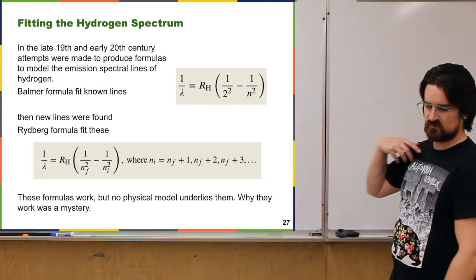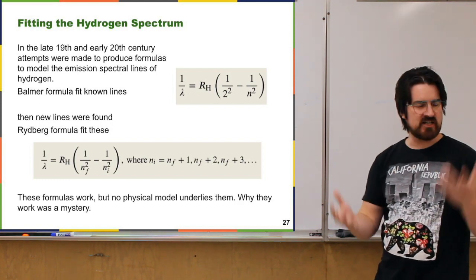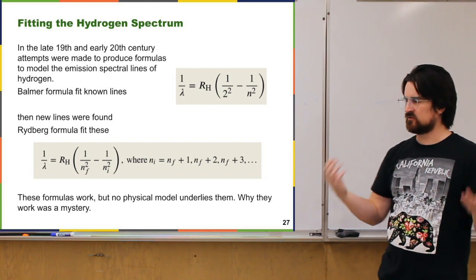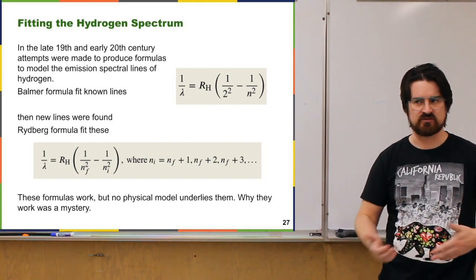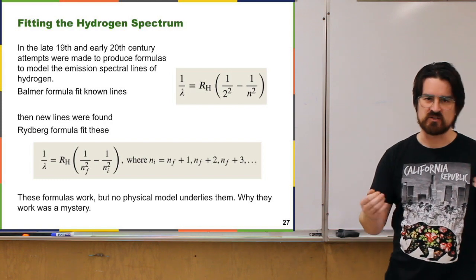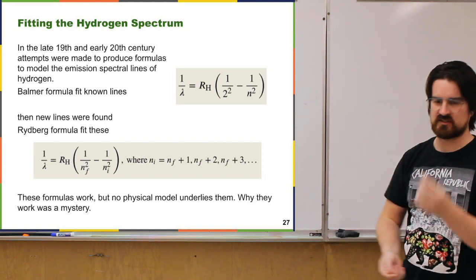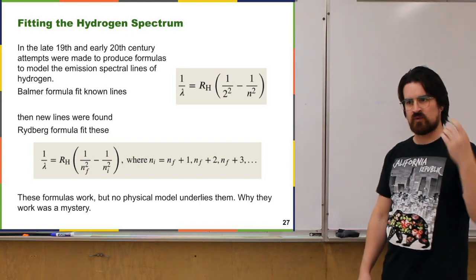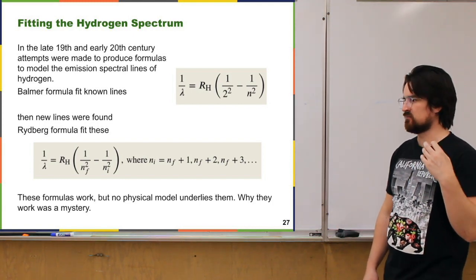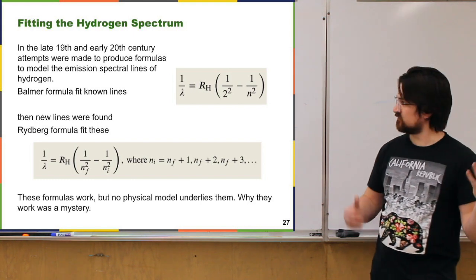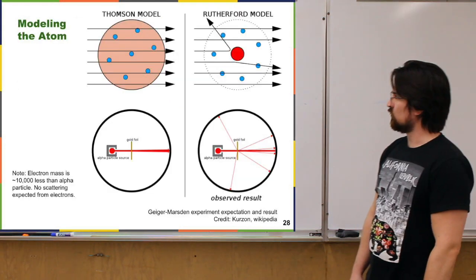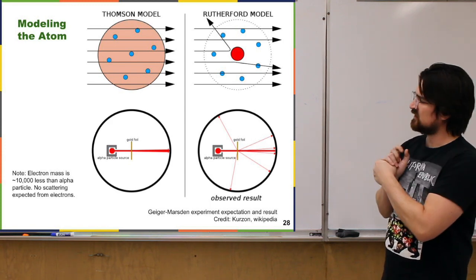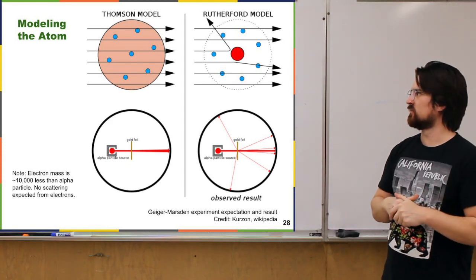These formulas worked, but it's like you have data and you're fitting a curve to it without any idea why that curve fits — no explanation for why you're using the equation you are. What was needed to answer that 'why' question was a model of the hydrogen atom. There actually were models. One of those earlier models was known as the Thomson model, also sometimes called the plum pudding model.